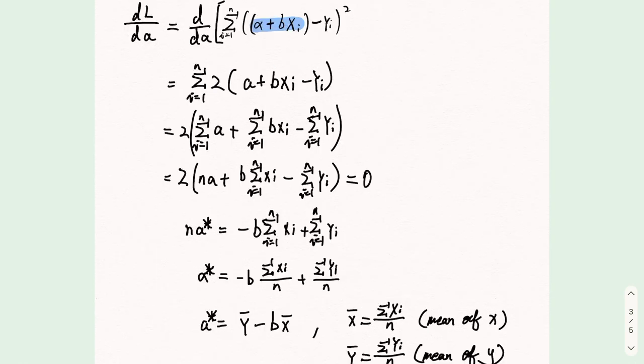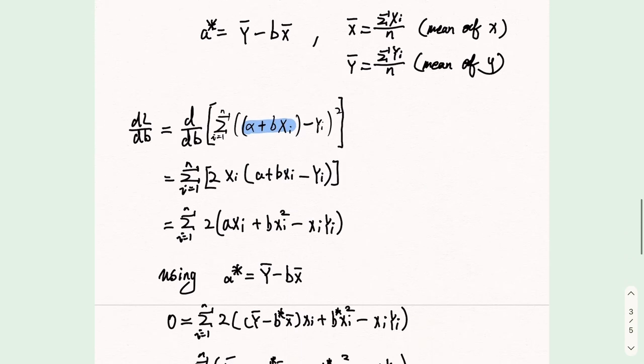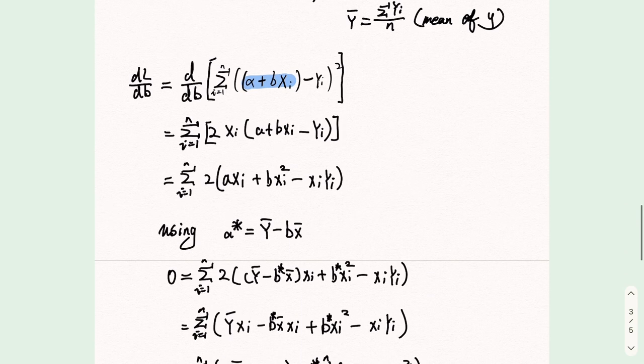To find the minimum, we need to take the derivative of L with respect to a. After simplification, we get a star is equal to y bar minus b star x bar, where x bar is the mean of x and y bar is the mean of y. Then we take the derivative of L with respect to b to find b star.